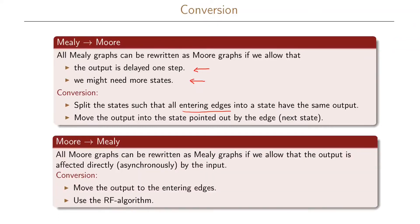We can also convert Moore graphs to Mealy graphs. All Moore graphs can be written as Mealy graphs if we allow that the output is affected directly — and in this case asynchronously — by the input. Instead of having the output produced when we clock the circuit or go to the next state, when going backwards in this conversion we move our output to the entering edges, which means the output is affected immediately before clocking compared to the Moore graph. When we have done this, we use the RF algorithm to remove all equivalent states.